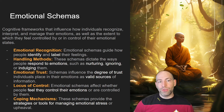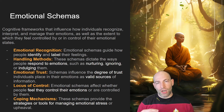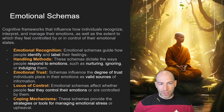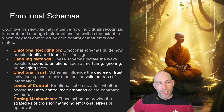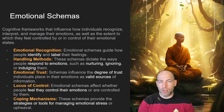Emotional schemas are cognitive frameworks that influence how individuals recognize, interpret, and manage their emotions, as well as whether they feel controlled by or in control of their emotional states. Emotional recognition: emotional schemas teach you how to recognize, identify, and label your emotions. There's a common trope in older film and TV where men say they have no emotions while screaming angrily — this is a schema. Because of patriarchy and toxic masculinity, men are often conditioned to believe they are not allowed to have emotions, leaving many unable to identify and label what they feel.